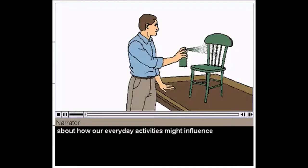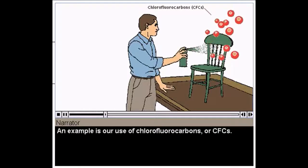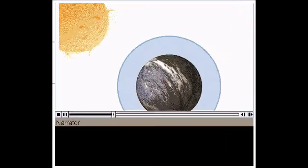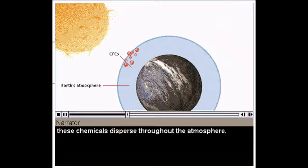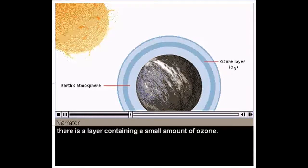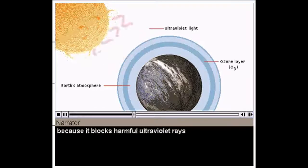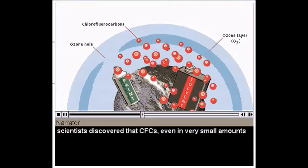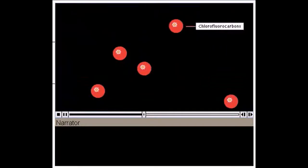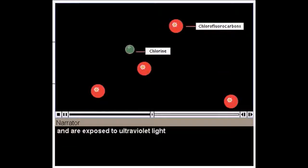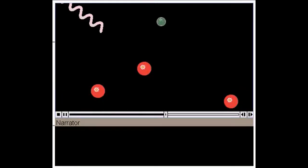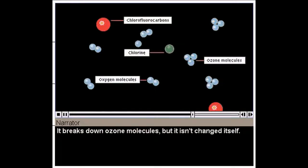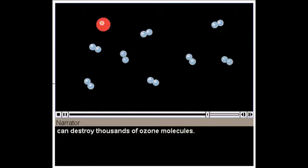Most of us don't think about how our everyday activities might influence the global environment. An example is our use of chlorofluorocarbons, or CFCs. These compounds are useful as refrigerants, solvents, and aerosol propellants. When released into the air, these chemicals disperse throughout the atmosphere. In the upper atmosphere, there is a layer containing a small amount of ozone. The ozone layer is important to living things because it blocks harmful ultraviolet rays from reaching the surface. A few years ago, scientists discovered that CFCs, even in very small amounts, cause ozone to break down. When CFCs reach the upper atmosphere and are exposed to ultraviolet light, they release a highly reactive chlorine gas. The chlorine acts as a catalyst. It breaks down ozone molecules, but it isn't changed itself. A single molecule of chlorine can destroy thousands of ozone molecules.